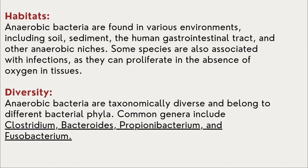Habitat: anaerobic bacteria are found in various environmental conditions including soil, sediments, human gastrointestinal tract, and other anaerobic niches. Some species are also associated with infection as they can proliferate in the absence of oxygen in tissues. Diversity: anaerobic bacteria are taxonomically diverse and belong to different bacterial phyla. Common examples include Clostridium, Propionibacterium, Fusobacterium, Bacteroides, etc.